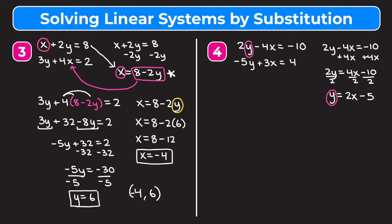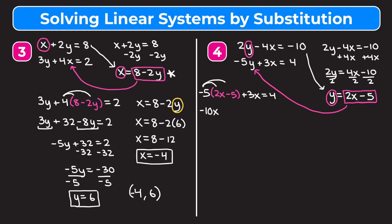We know y equals 2x minus 5, so we substitute into the second equation: negative 5 times (2x minus 5) plus 3x equals 4. Distributing negative 5 gives negative 10x and positive 25. Combining negative 10x and 3x gives negative 7x, so negative 7x plus 25 equals 4.